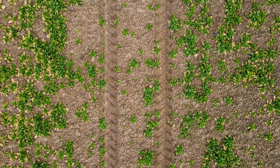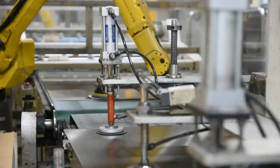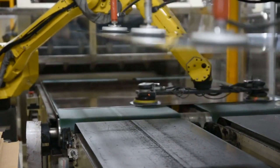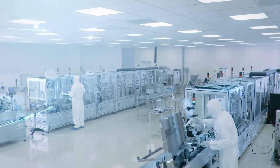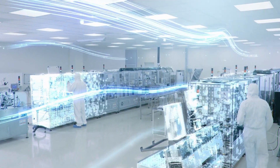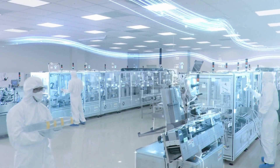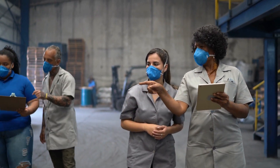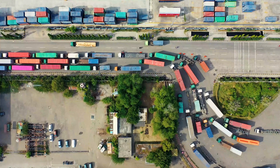Manufacturing: during manufacturing, raw materials are transformed into finished products. This often consumes energy and water, emits pollutants, and generates waste. LCA helps us identify opportunities to improve efficiency and reduce environmental impacts.